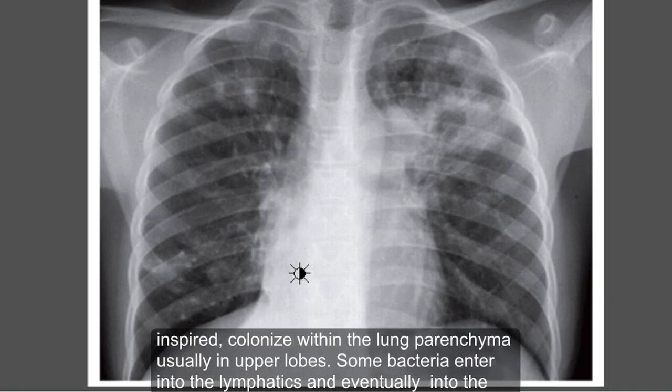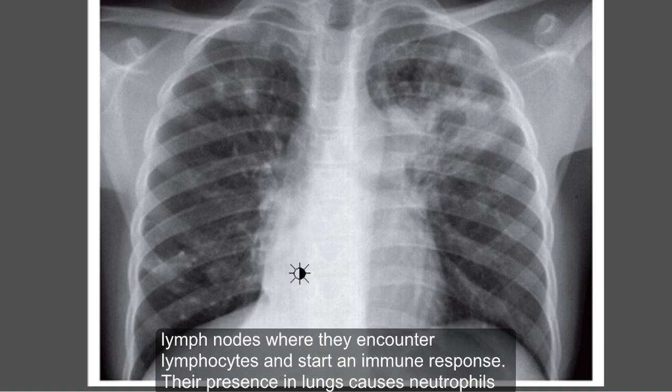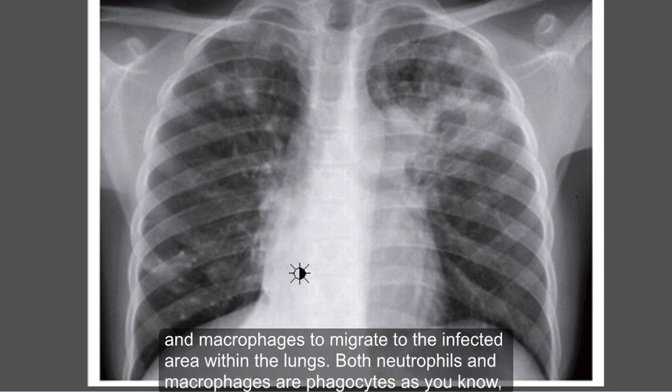Mycobacterium tuberculosis is an acid-fast bacillus. The bacteria, once inhaled, colonize within the lung parenchyma, usually in the upper lobes. Some bacteria enter the lymphatics and eventually the lymph nodes, where they encounter lymphocytes and start an immune response. Their presence in the lungs causes neutrophils and macrophages to migrate to the infected area.